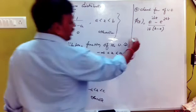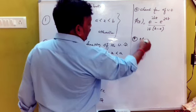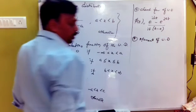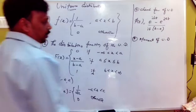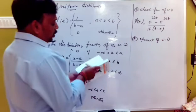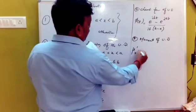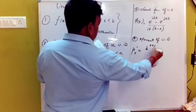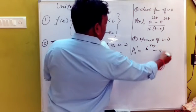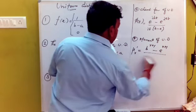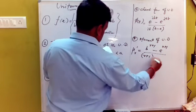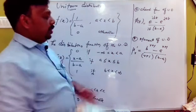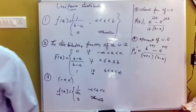There are moments of the uniform distribution. The r-th moment formula is: b to the power r+1 minus a to the power r+1, divided by (r+1) into (b minus a). So in this formula we can apply mu1 prime, mu2 prime, mu3 prime as well.